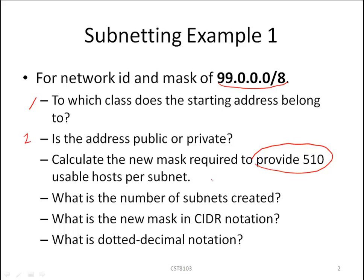Calculate the new mask required to provide 510 usable hosts. What is the number of subnets created? What is the new mask in CIDR notation? And what is the dotted decimal notation?